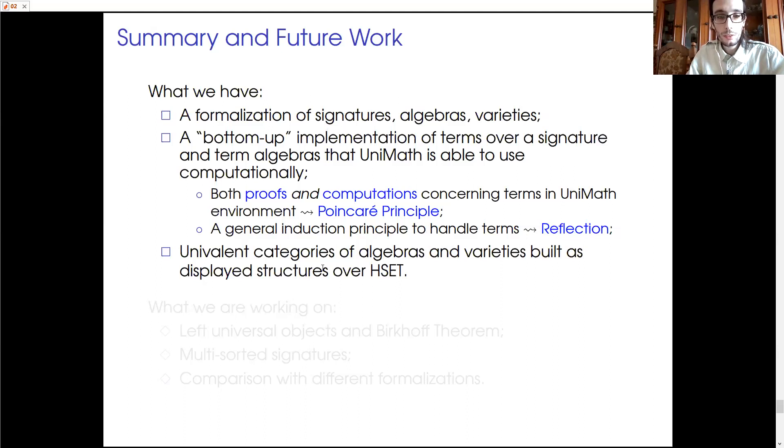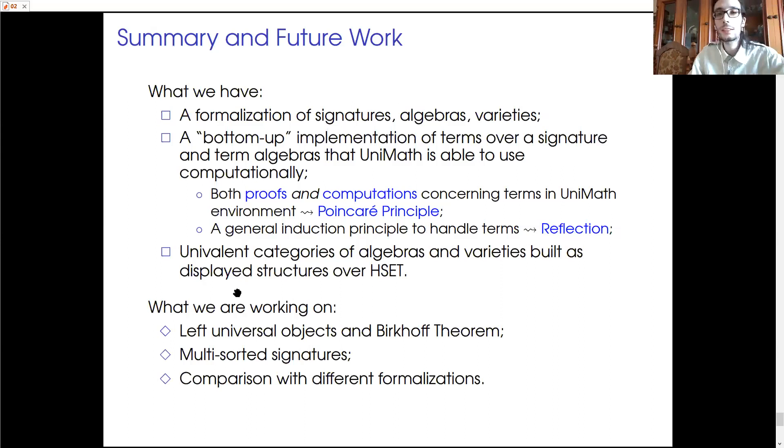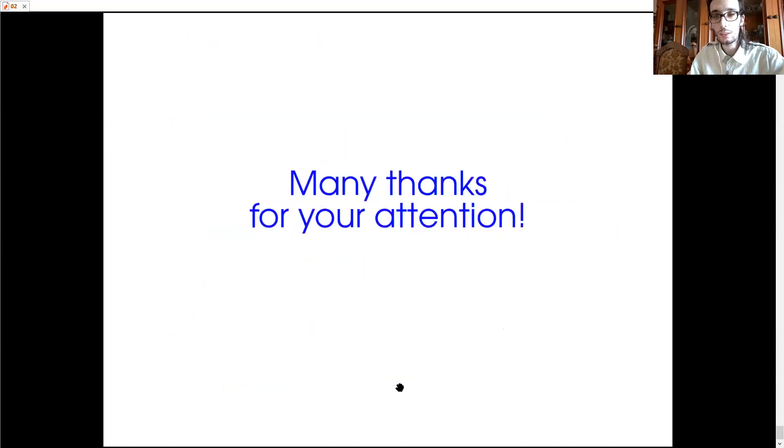And finally, a few words on what we would like to do next. We would like to construct more left universal objects and prove Birkhoff's theorem that characterizes varieties in terms of closure conditions of algebras. We would like to move to multi-sorted signatures because we would like to use more heavily dependent types. And we would like also to start a finer analysis and comparison with other formalizations, like the formalization of related topics, obviously, like the formalization of initial semantics in UniMath by Ahrens, Kapulkin and Shulman and many others. And a formalization of algebraic theories that is still a work in progress of mine. So basically, that is the end of my talk and I just want to thank you for your attention.